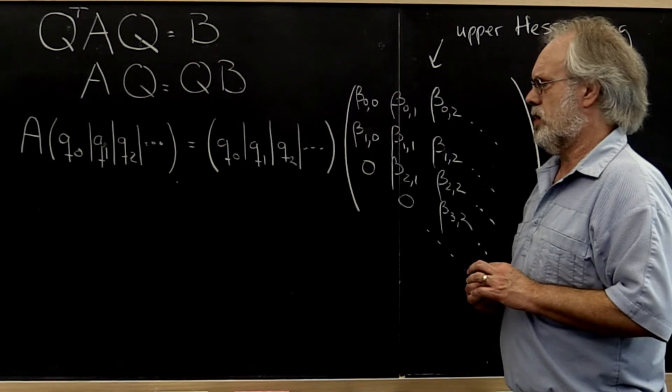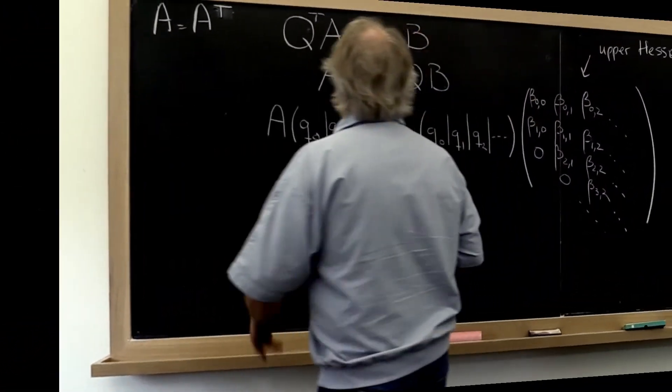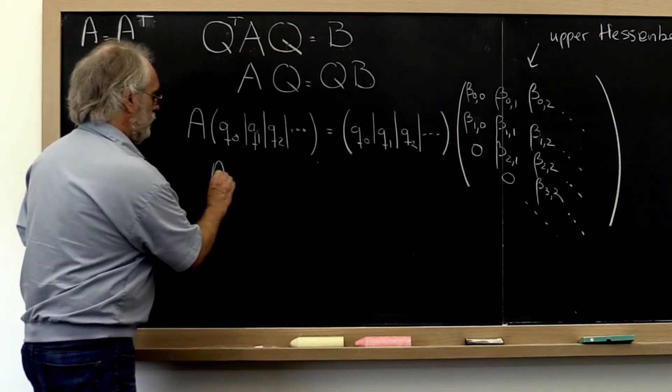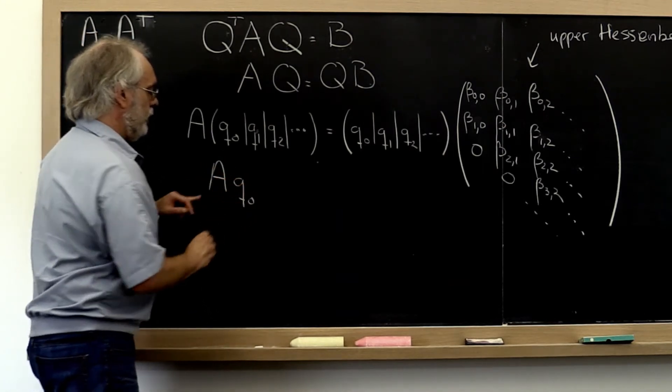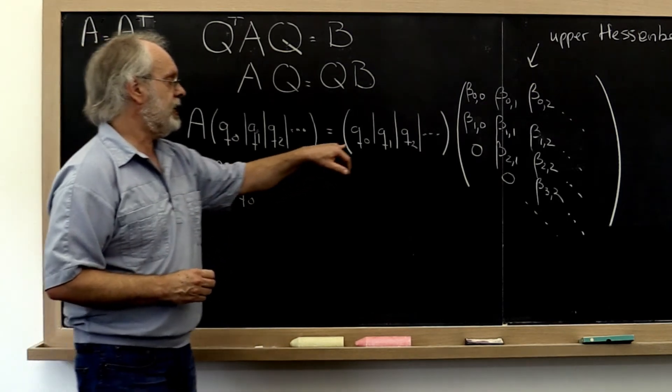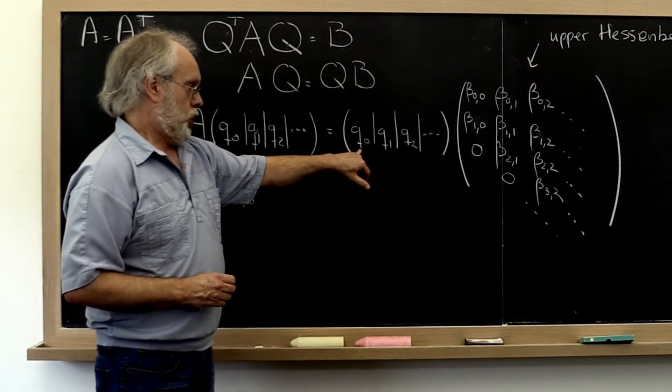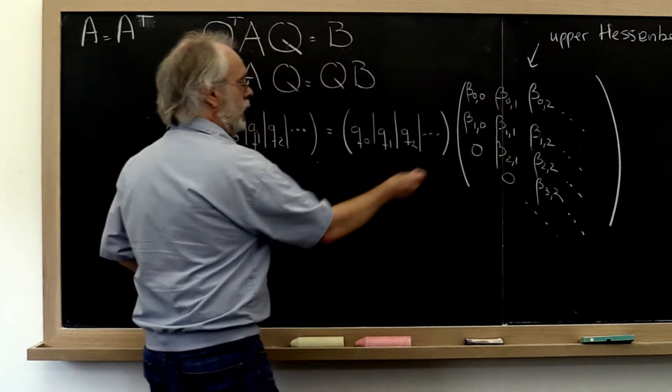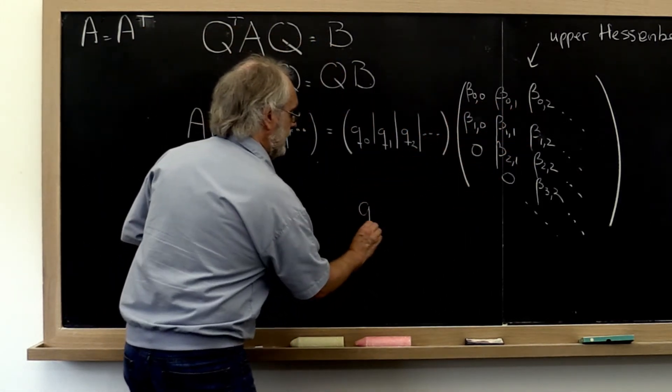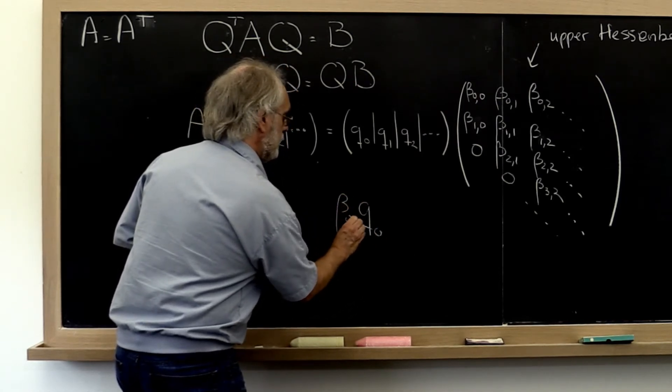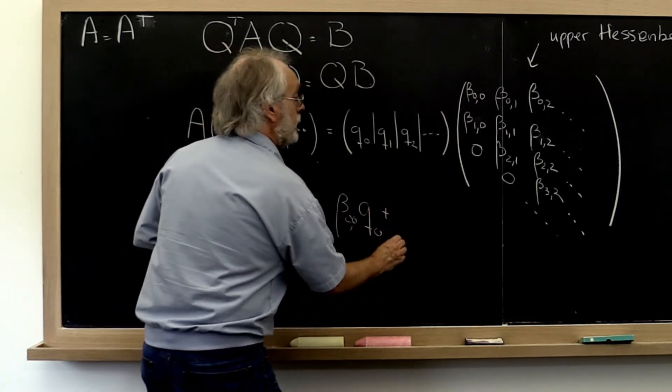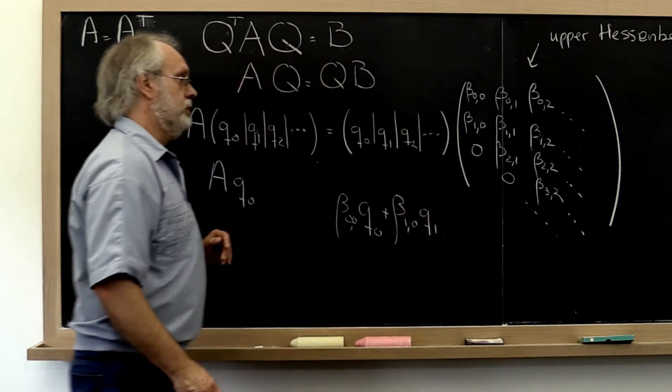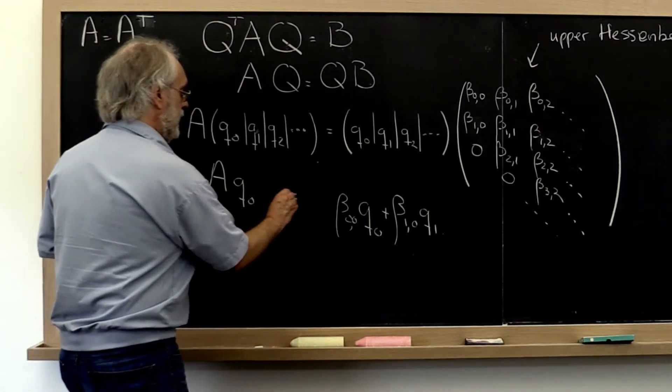Now how does this work? If we know what Q is, then we can compute A times Q zero on this side. But notice that that must be equal to the first column of the matrix on the right. And the first column of the matrix on the right is equal to beta zero zero times Q zero plus beta one zero times Q one. So these two must be equal.